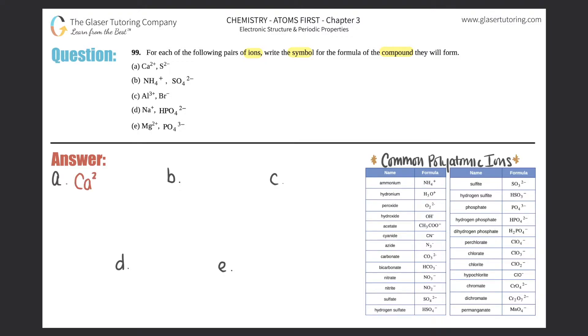For a, they're telling us we need to make a compound between Ca²⁺ and S²⁻. For all of these, if we scan them, these have all charges - there's always a positive and there's always a negative. So all of these represent ionic compounds.